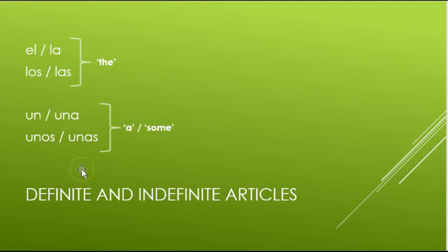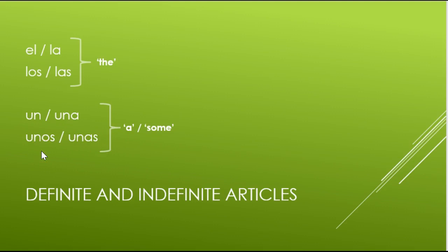For indefinite articles — 'a' or 'some' — you have four forms as well: un and una for singular ('a'), unos and unas for plural ('some'). Un is masculine: un lápiz — a pencil, un reloj — a clock, un escritorio — a desk. Una is feminine: una computadora — a computer, una mesa — a table, una mochila — a backpack. For plural: unos lápices — some pencils, unos relojes — some clocks, unos libros — some books. Unas calculadoras — some calculators, feminine plural. You'll need to know these for your test.